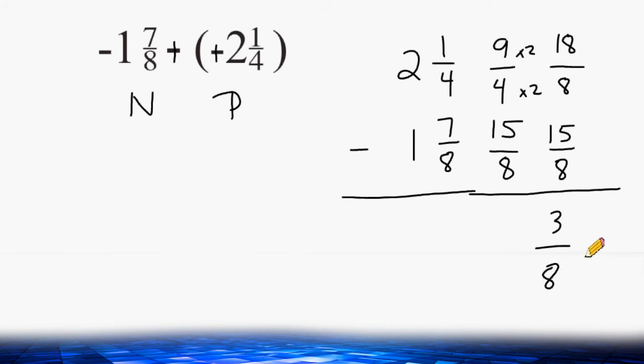But now we must determine whether this is going to be positive 3 eighths or negative 3 eighths. Remember, if the signs are different, you have to find the difference of the absolute values, and we already did that.